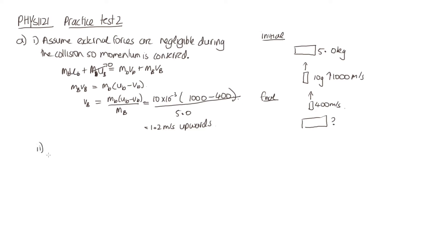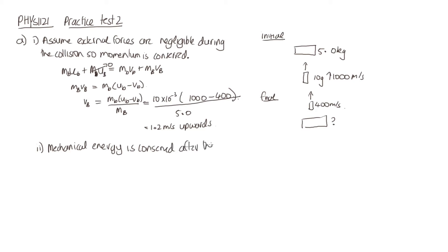In part two of this question, we're asked to calculate the maximum height to which the block will rise above the table. To get that, we'll assume that once the bullet passes through the block, non-conservative forces aren't doing any work. So we can assume that mechanical energy is conserved after the bullet passes.